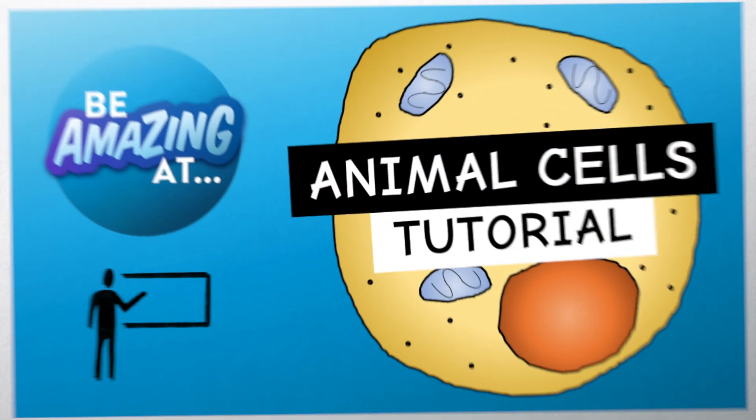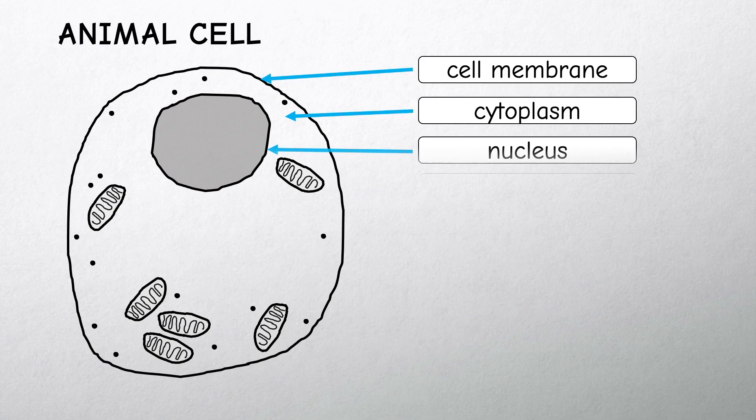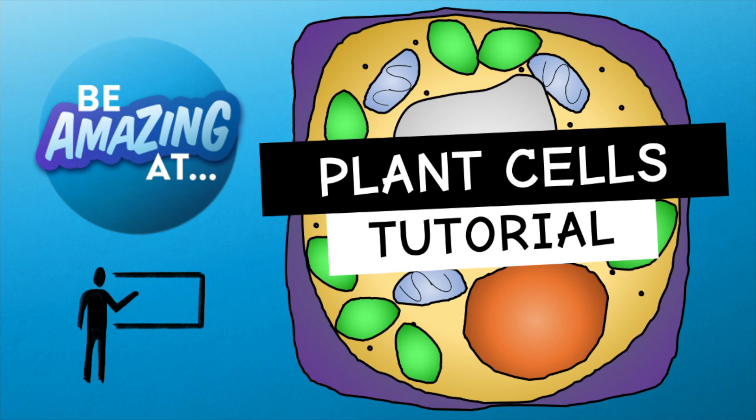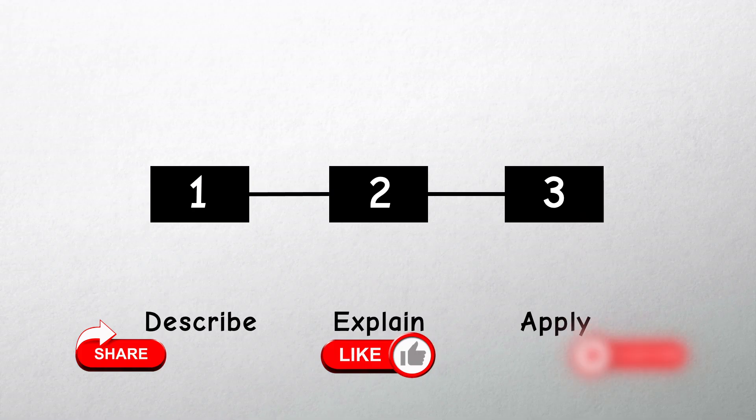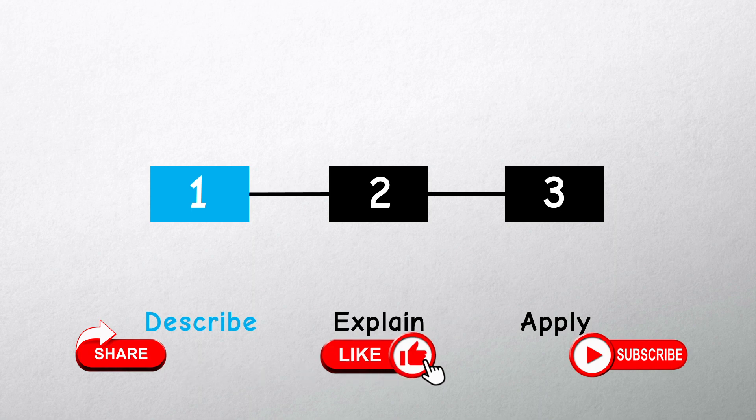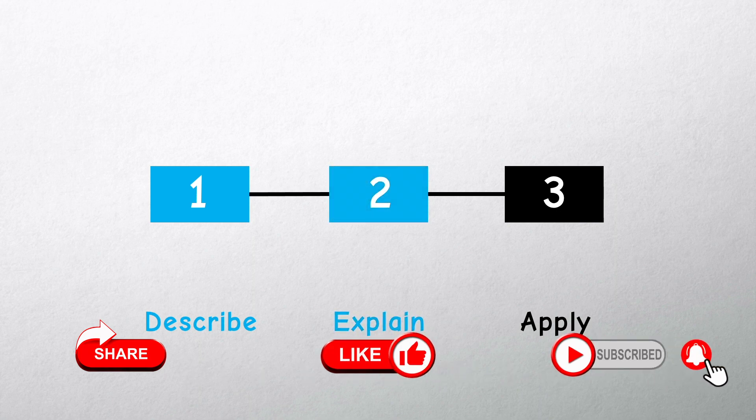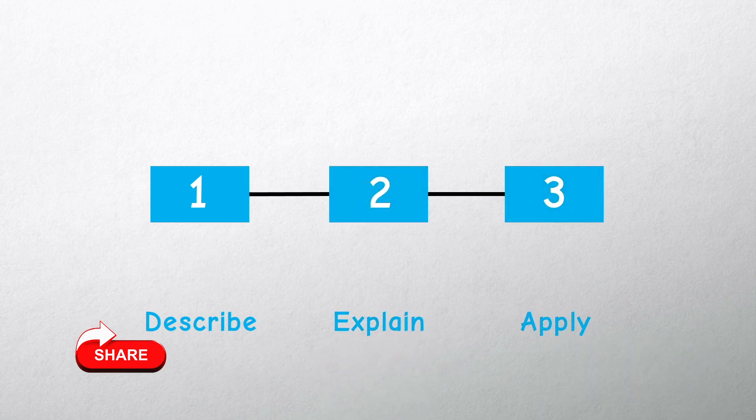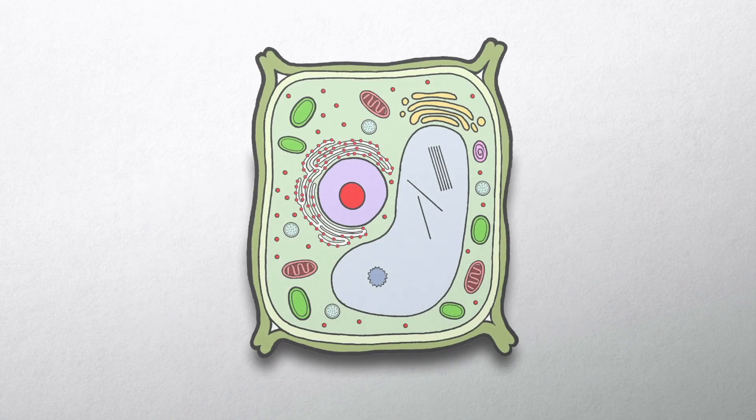In the last biology video we looked at animal cell structure. In this free science lesson we learn how to describe the structure of a plant cell, explain the function of the various cell parts or organelles, and apply the ideas to the examples given.